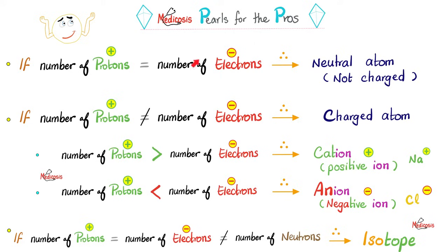Since the positive charges equal the negative charges, you have a neutral atom. But what if the number of protons exceeds the number of electrons? Then you have a positive ion. What if the number of negative electrons exceeds the number of positive protons? Then you have a negative ion. What if the number of protons equals the number of electrons, but the number of neutrons is different? That's an isotope — such as carbon-13, carbon-14, etc.